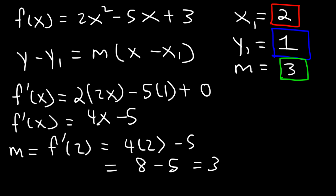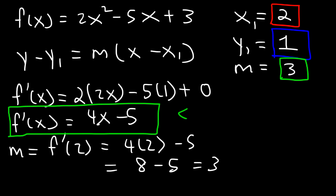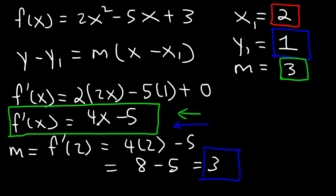Make sure you understand the difference between the derivative and the slope. The derivative is a function in terms of x. In this particular example, the slope is a specific value of the derivative function at some x value. So when x is 2, the slope is 3. However, the slope can change with this function — for example, when x is 1, the slope will be negative 1. So the derivative is a function that gives you the slope at any x value.